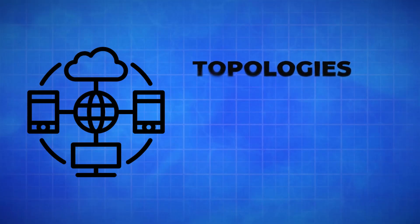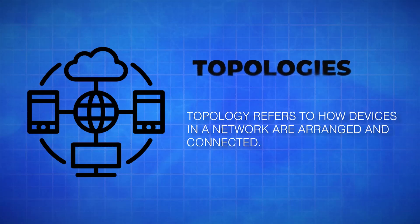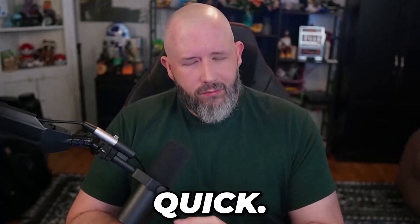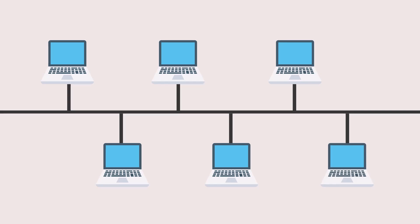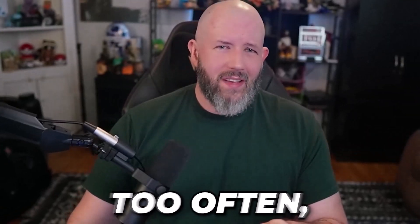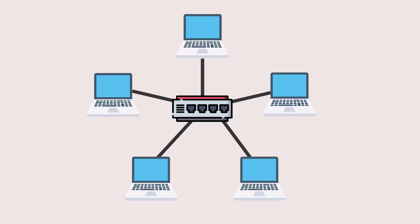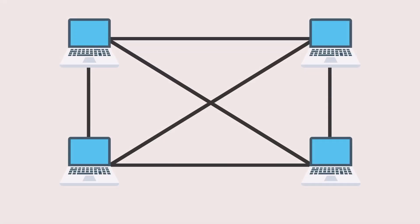Then you have your topologies. Your topology refers to how devices in a network are arranged and connected. Choosing the right topology affects efficiency, fault tolerance, and scalability. The first one is a bus — all devices share a single communication line. It's simple but can slow down as more devices are connected. A star topology is where devices are connected to a central switch or router — this is common in modern networks due to its reliability. Then you have your mesh — devices are interconnected, creating multiple paths for redundancy. It's highly fault tolerant, but it can be a bit more expensive.